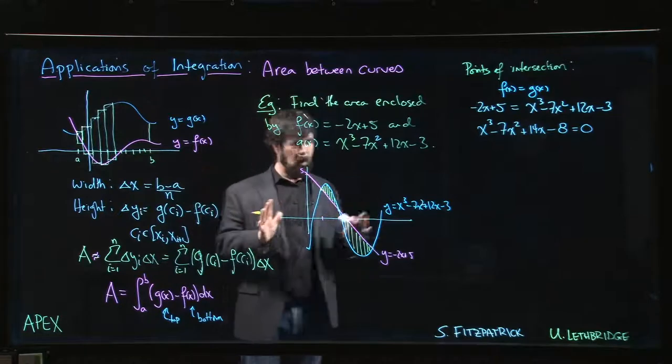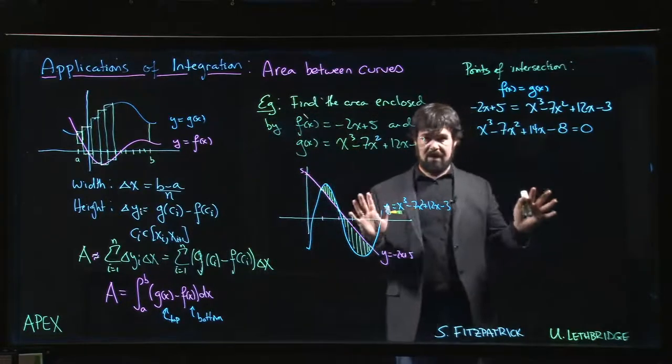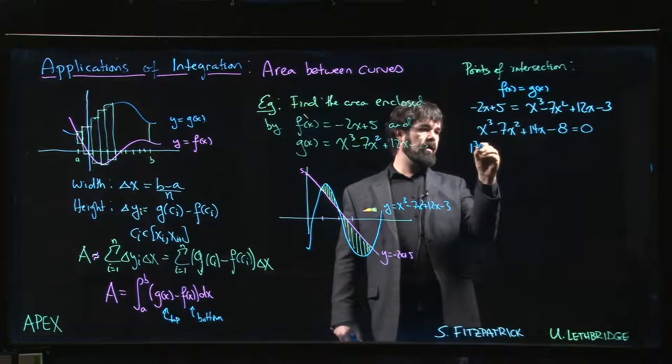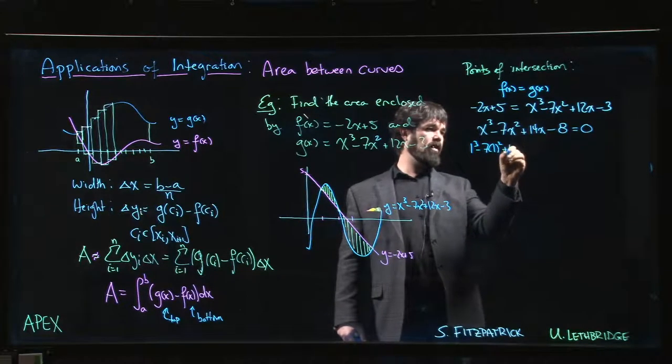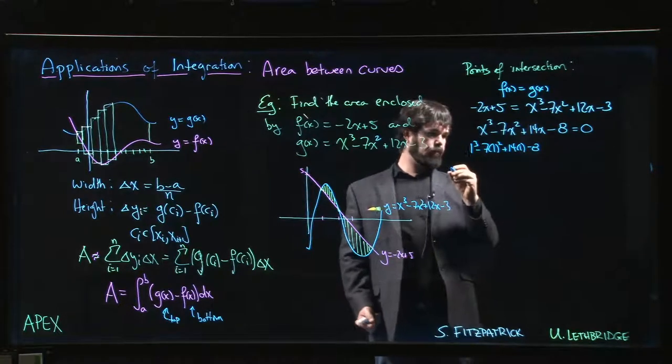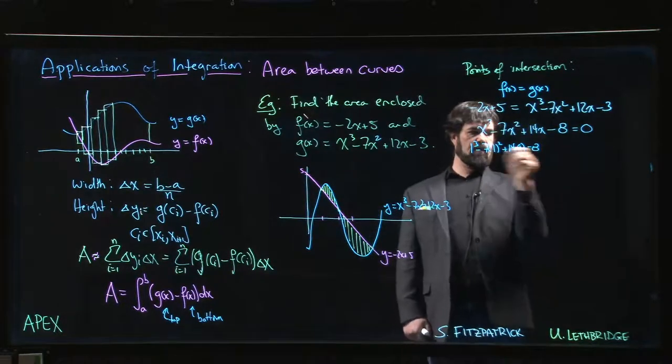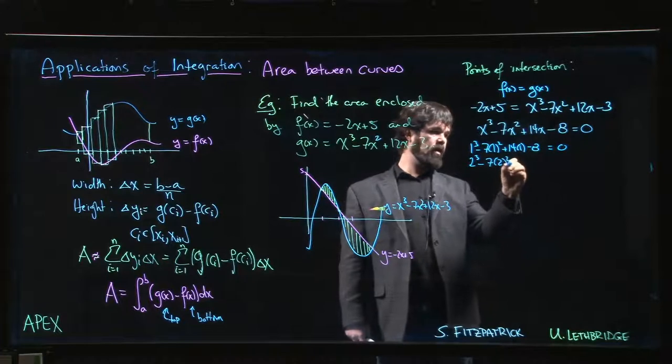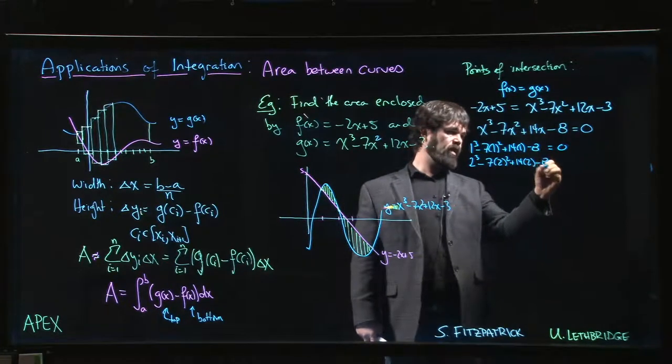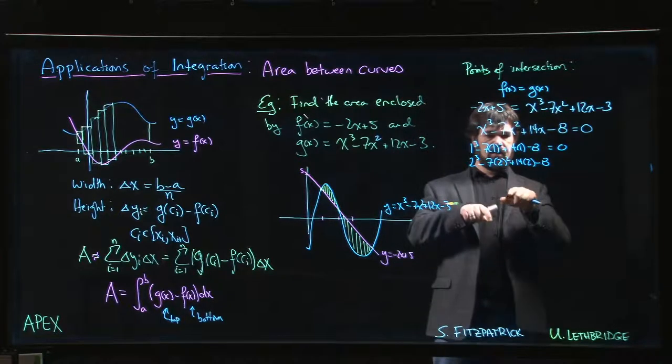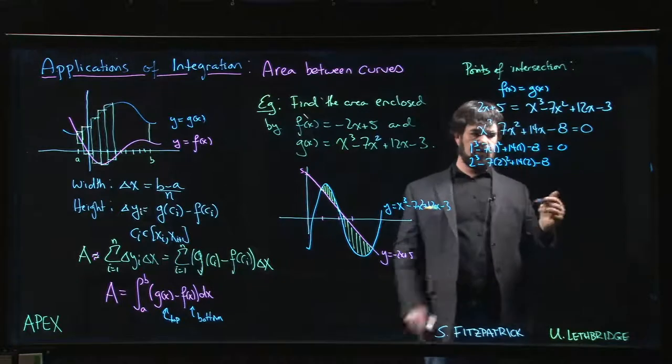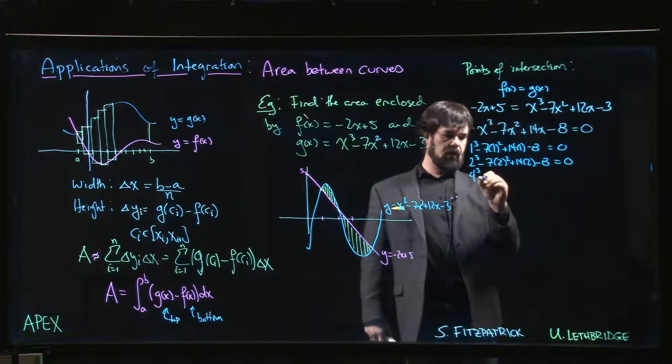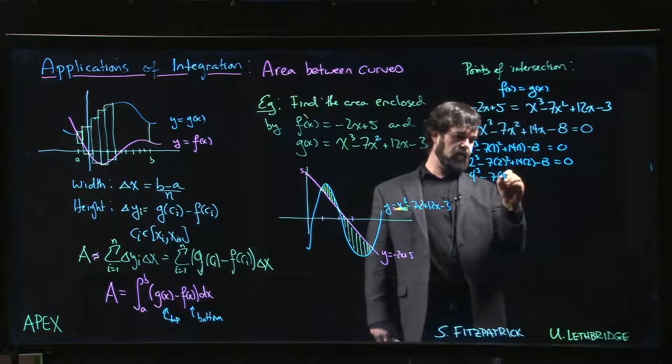If you don't feel like messing around with polynomial long division, you can just kind of do some guessing and checking. We can check that 1 works because if I do 1³ - 7 times 1² + 14 times 1 - 8, that gives me 0. 15 minus 15. 2 works because 2³ - 7 times 2² + 14 times 2 - 8, that's 8 minus 8, 28 minus 28, equals 0.